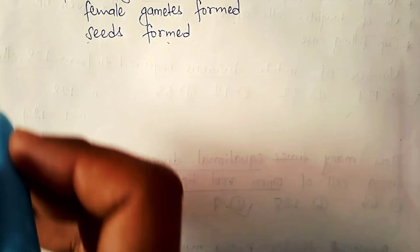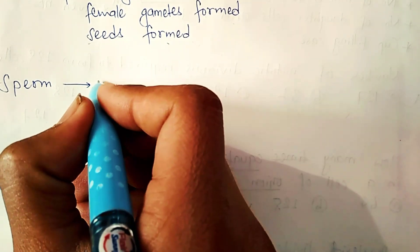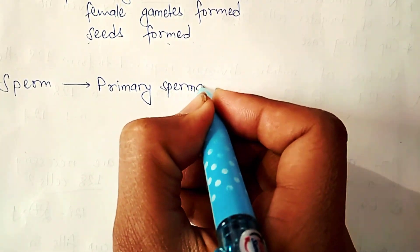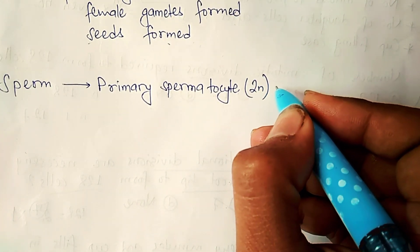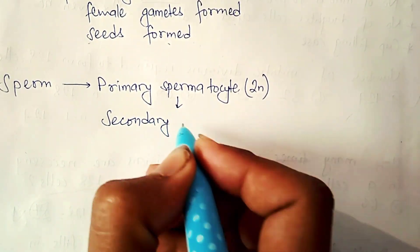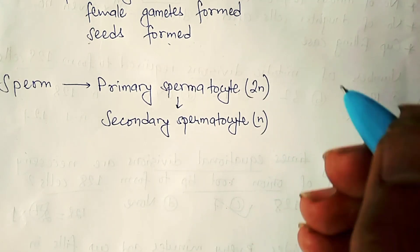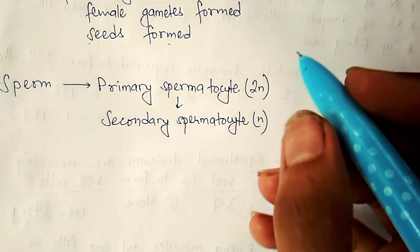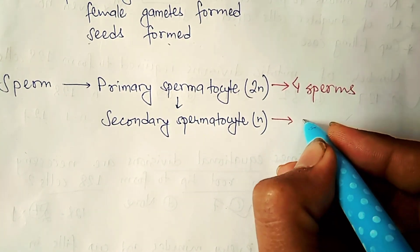Taking sperm as the male gamete: first there is a primary spermatocyte, which is 2n (diploid). It will form secondary spermatocytes which are n (haploid). The number of sperms formed from one primary spermatocyte is 4 sperm, and the number of sperms formed from one secondary spermatocyte is 2 sperm.